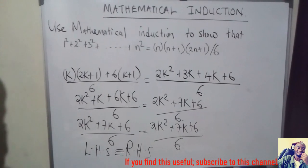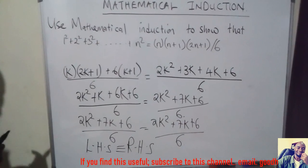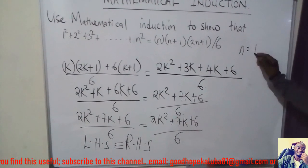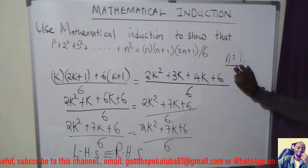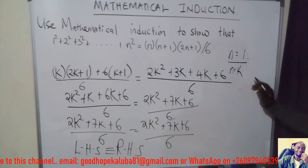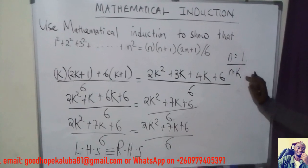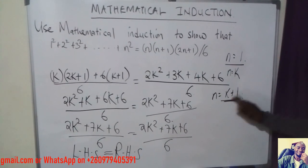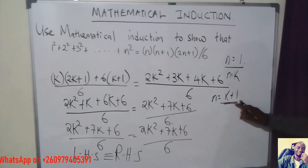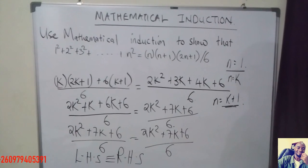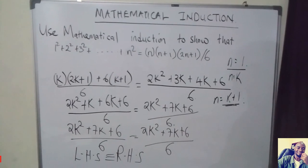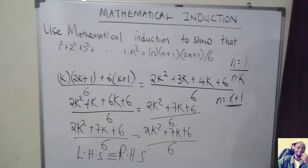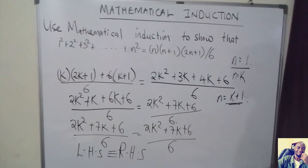To summarize: if you are asked to show a theorem or formula is true using mathematical induction, first prove it true for the smallest integer, n equals 1. Then assume it is true for n equals k. Then show it is true for n equals k plus 1 by proving LHS equals RHS. If they match, the formula is proven correct. If they don't match, the formula is wrong.